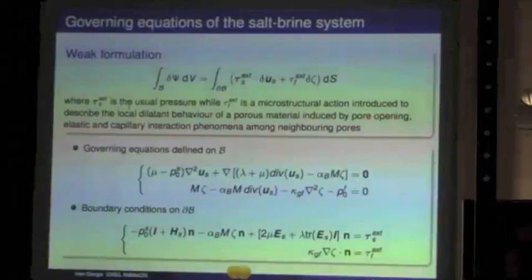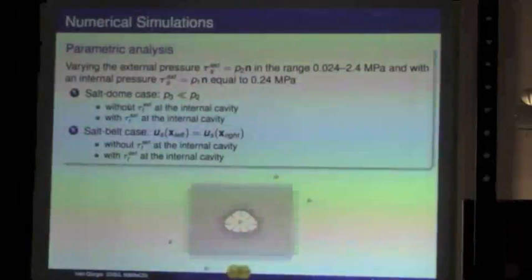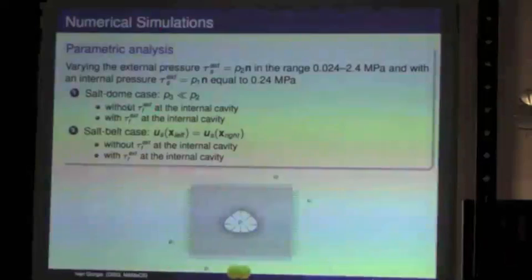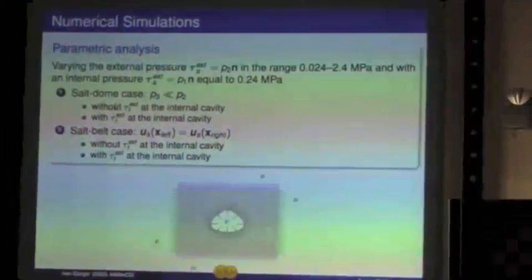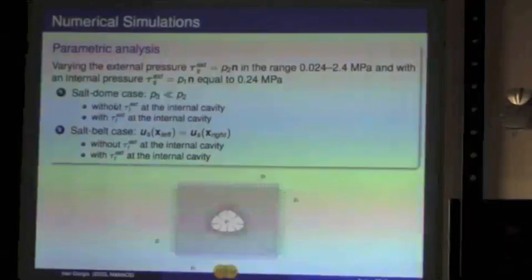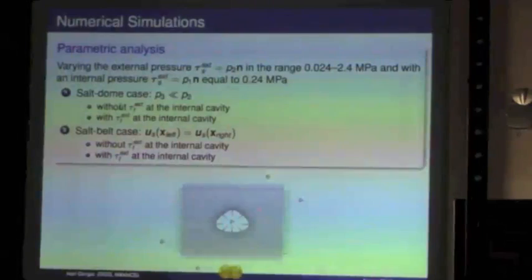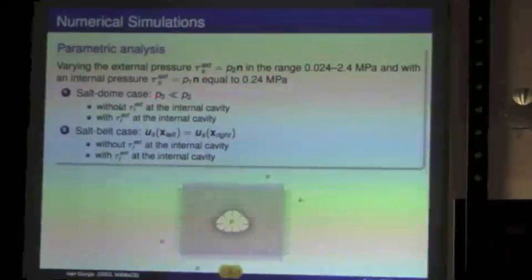Now I show you some numerical simulation on two cases: a case of a salt dome, a vertical structure in which the pressure on the left and right sides is very low respect to the pressure on the top and bottom. Here is the cavity of the cavern with another different pressure P_int. This assumption is related to the fact that pressure P3 is very less than P2, because if we have a trap with natural gas, the pressure here is very low respect to this edge.